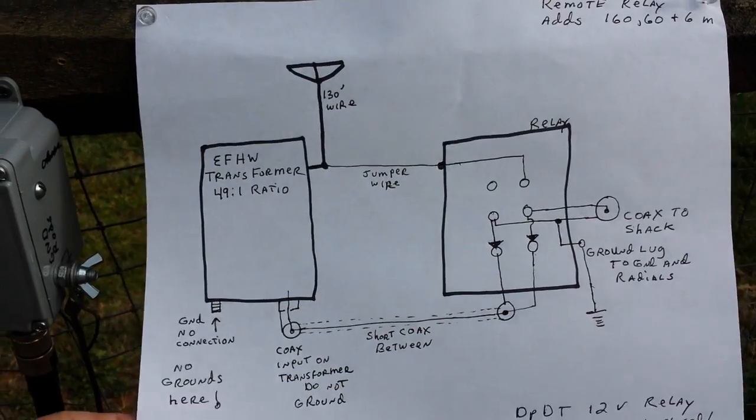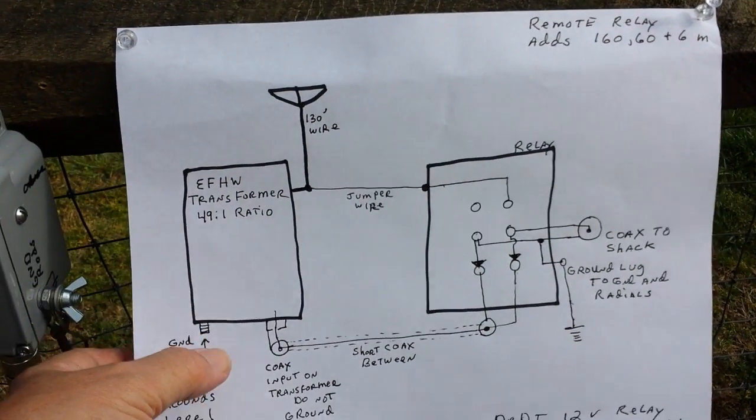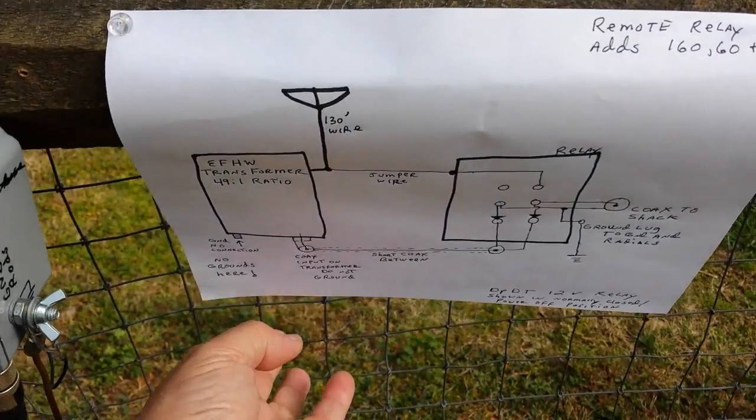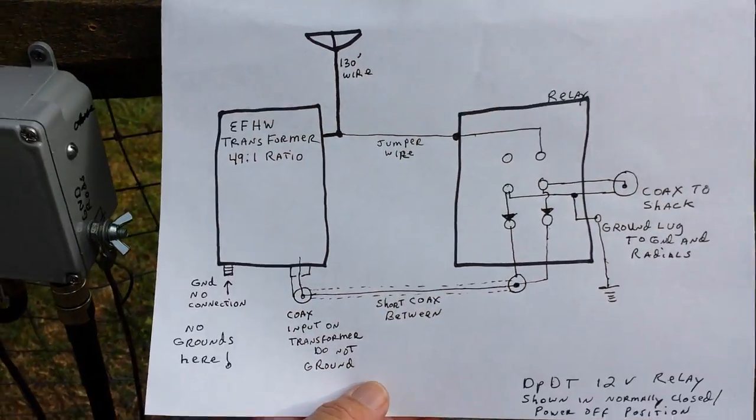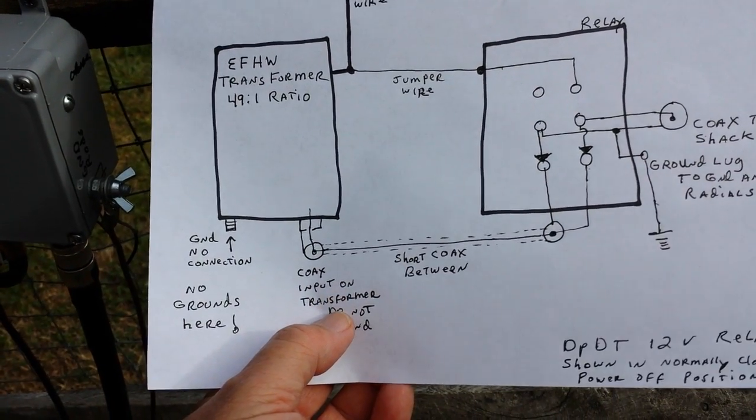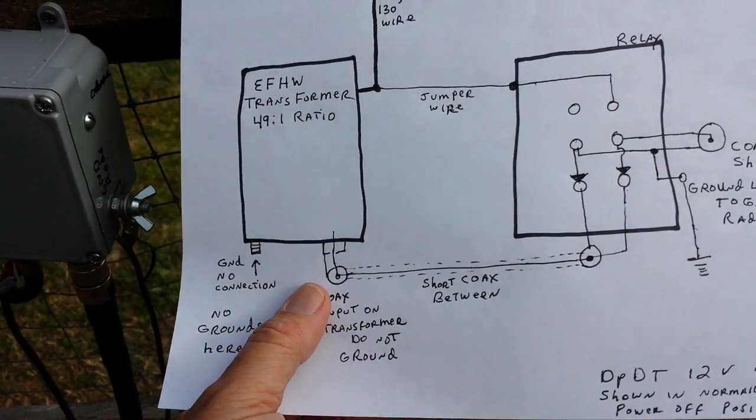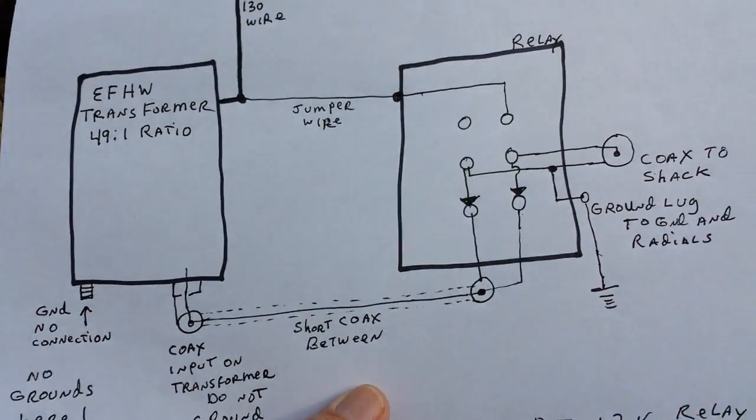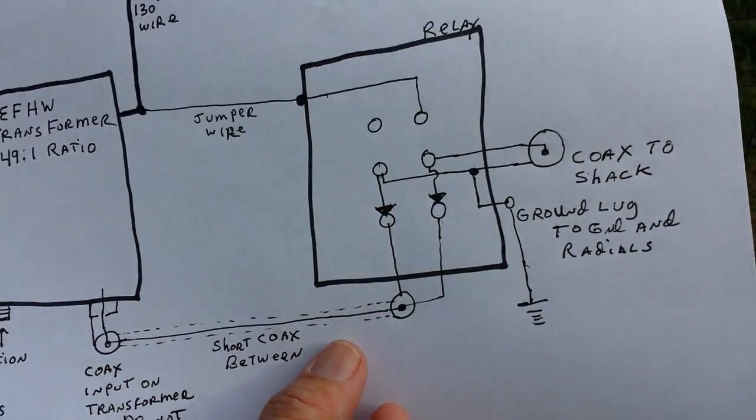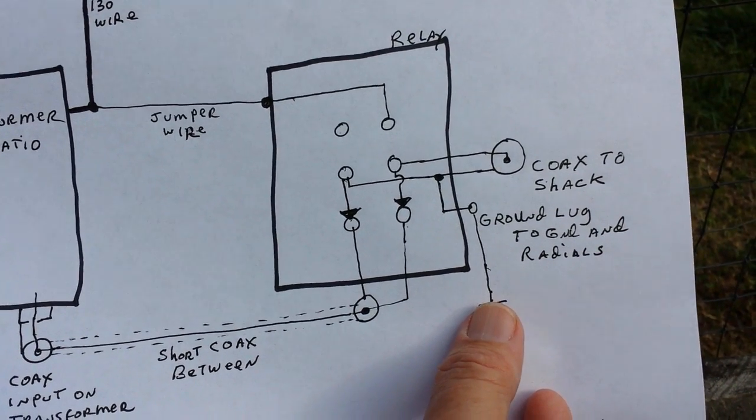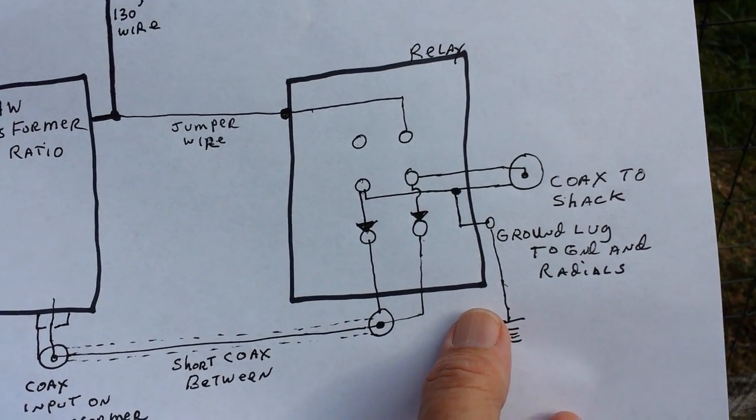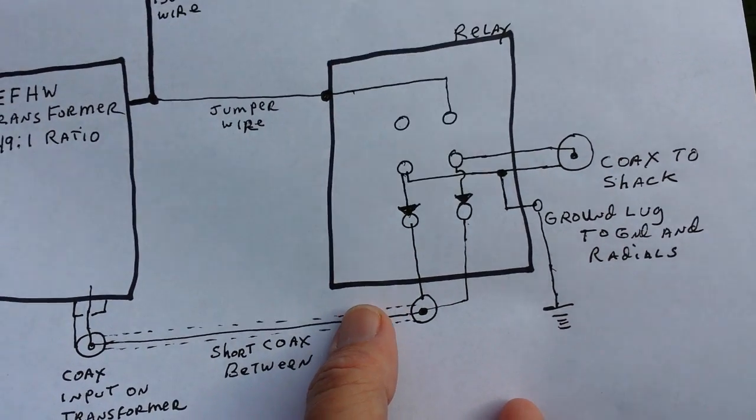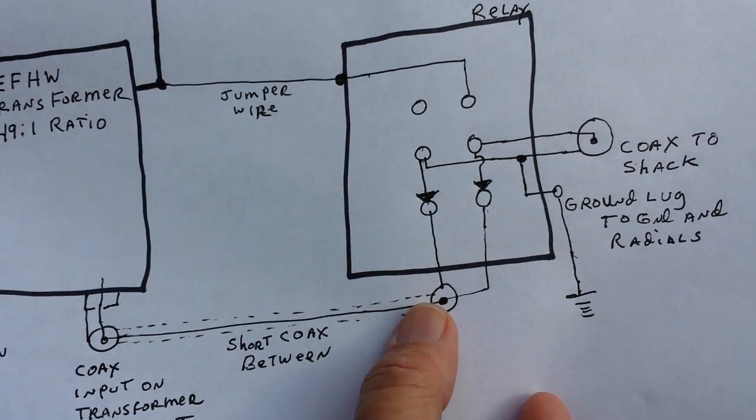This little diagram shows here's your transformer, the EFHW transformer with a 49 to 1 ratio. There's your coax input down here. And be sure that you do not ground this thing at all. The ground must come on the other side of the relay over here so your coax from the shack is grounded at all times and the ground is switched.